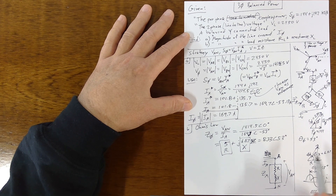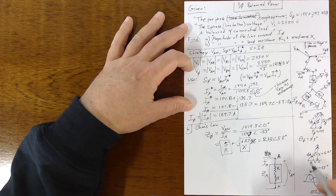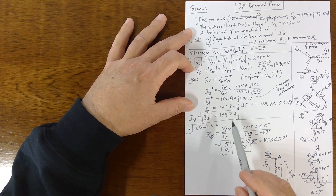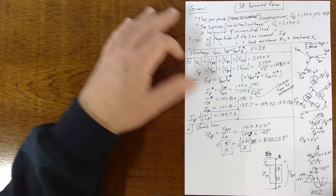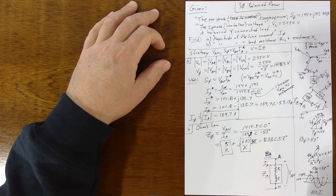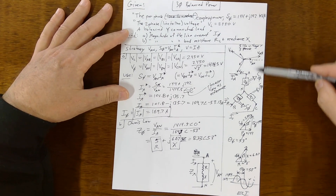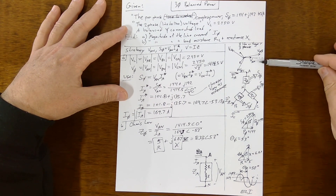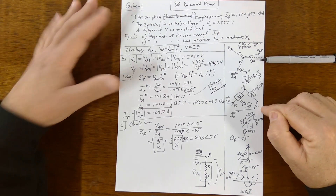To summarize the magnitudes: V = 1414 V and I = 169.7 A. Pretty simple in terms of the number of calculations, but there's a lot to keep straight. This is a really good problem — make sure you understand it.